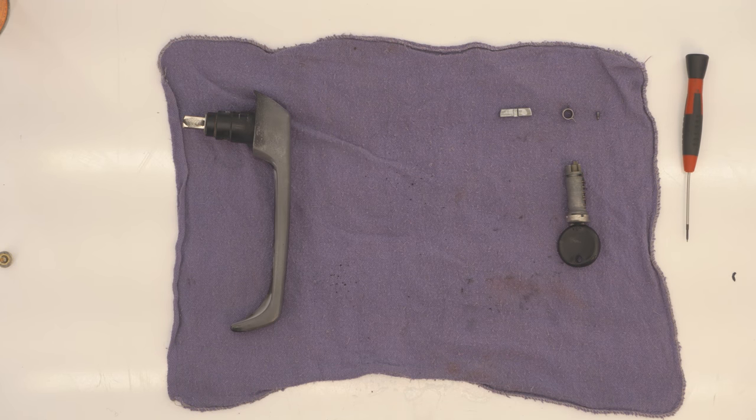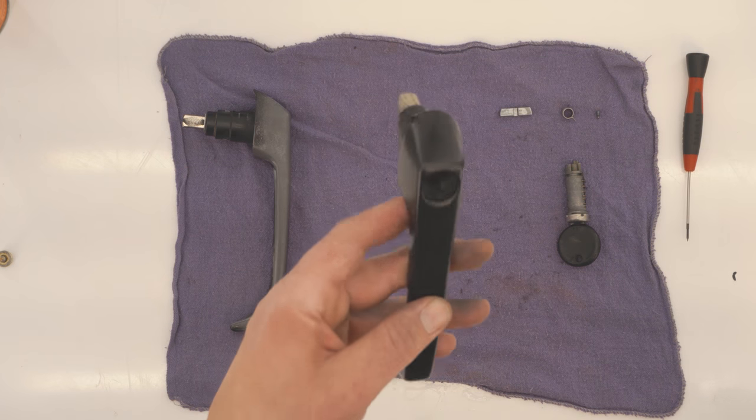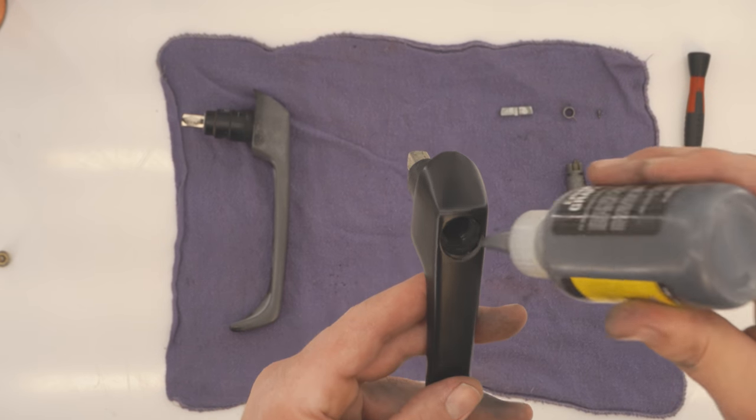Once we have that tumbler removed, we're ready to put our stock tumbler in so that our keys are the same. I like to put a little bit of graphite down into the handle as well.